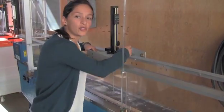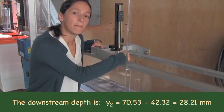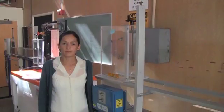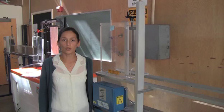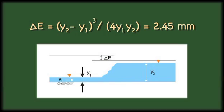The downstream depth is 28.21 millimeters. The energy loss due to the jump is 24.45 millimeters.